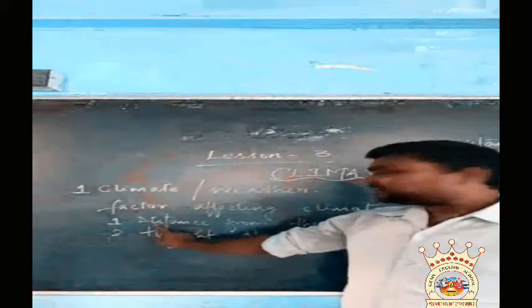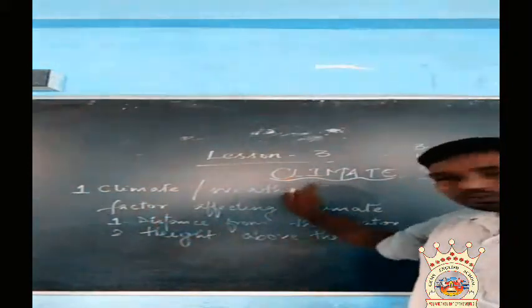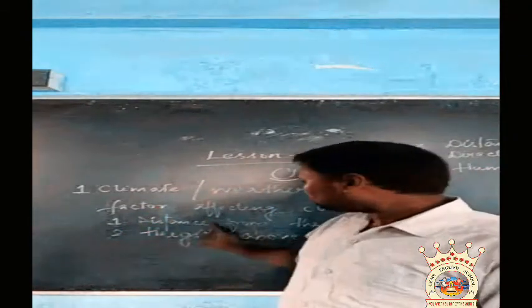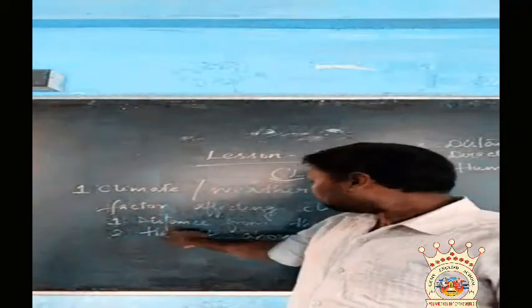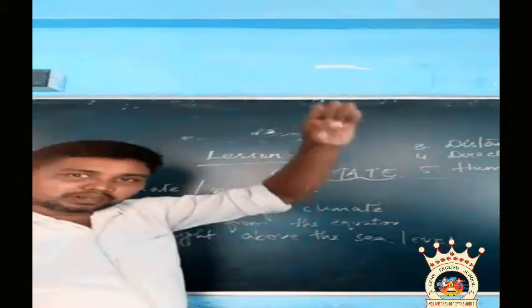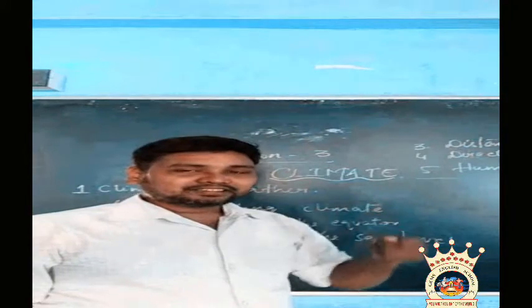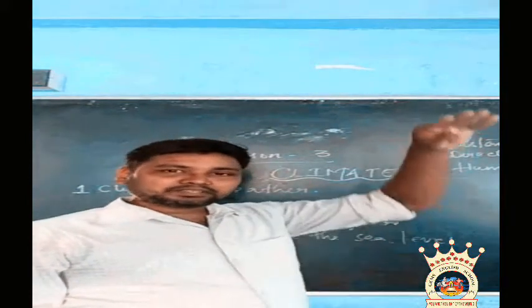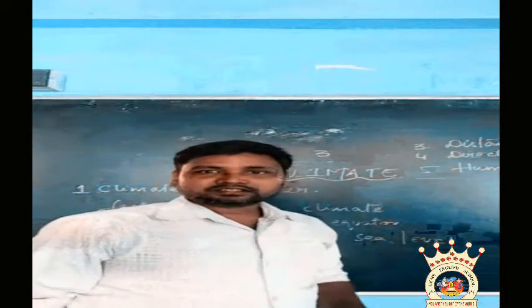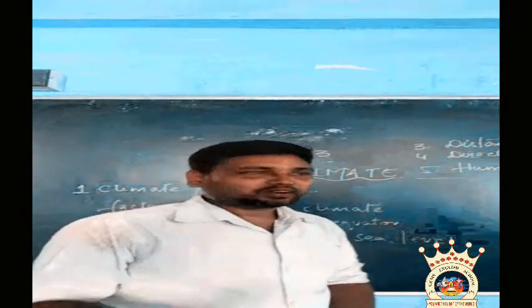These are the factors: distance from the equator — as shown in the last class, height above sea level — as you go up the temperature decreases, and near the earth the temperature is very hot.